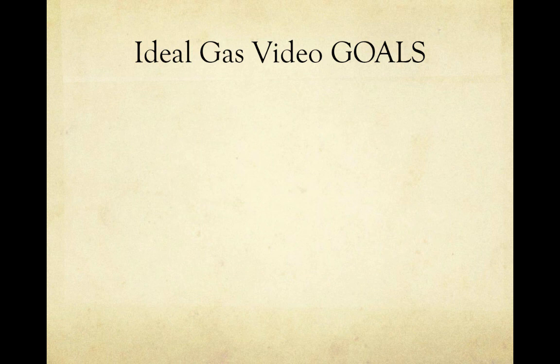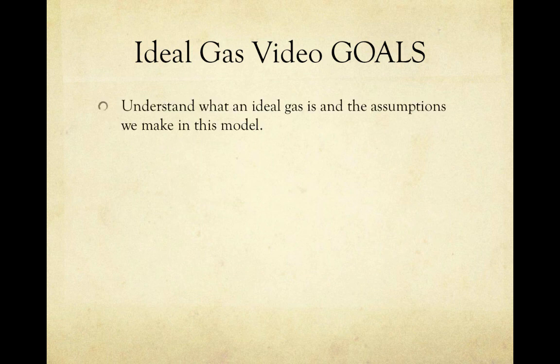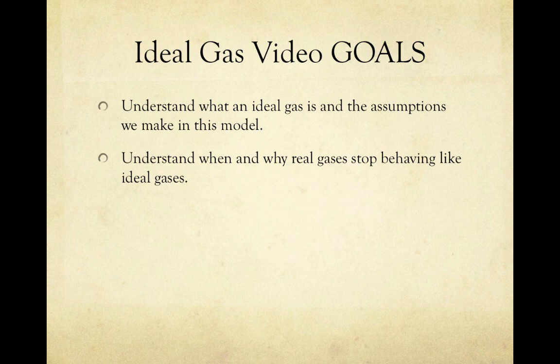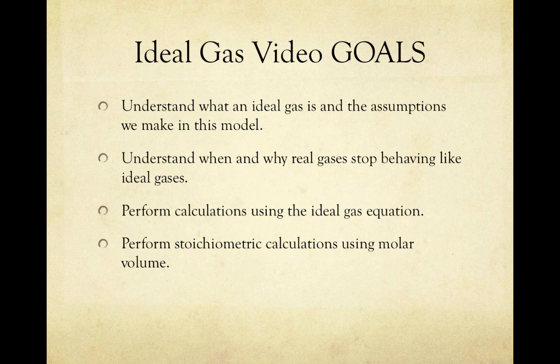That brings us to the end of this video. Let's review our goals. First, we looked at what an ideal gas is and the assumptions we make for the ideal gas model. Then we looked at when and why real gases stop behaving like ideal gases — when the assumptions that particles take up no space and exert no attractive forces break down, which happens at high pressures and low temperatures. Then we performed calculations using PV = nRT, and stoichiometric calculations using molar volume and PV = nRT when not at standard conditions.